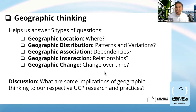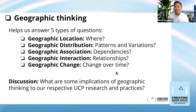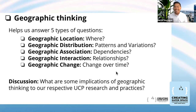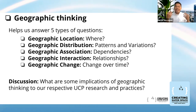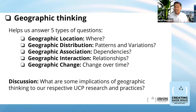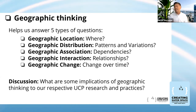Third, geographic association and dependencies — what is the relationship between school buildings or road networks and cases of violence or unarmed civilian protection? By mapping these variables we can better understand geographic associations. Fourth, geographic interaction — how do businesses, road networks, and mining projects interact with violence against civilians or unarmed civilian protection? Fifth, geographic change — how can we track changes over time? By mapping from 2018 to 2021, for example, we can detect changes over time. For discussion: what are some implications of geographic thinking to our respective UCP research and practices?